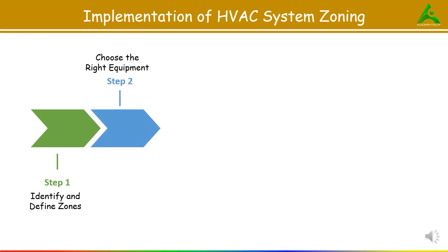The second step is to choose the right equipment. Implementing zoning requires specific components to control air flow and temperature for each zone. Install a separate thermostat for each zone to monitor and control temperature. Then we have a zone control panel, which serves as a central hub that communicates between thermostats and motorized dampers. Then we have motorized dampers, which are installed in the ductwork to regulate air flow to each zone. Finally, ensure the existing HVAC unit is compatible with zoning or consider upgrading to a zoning-capable unit.